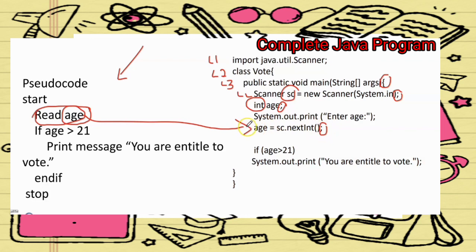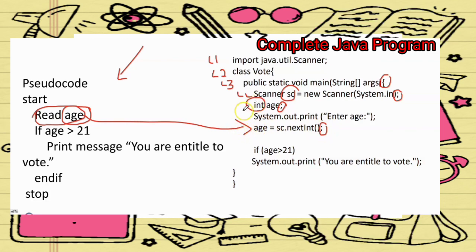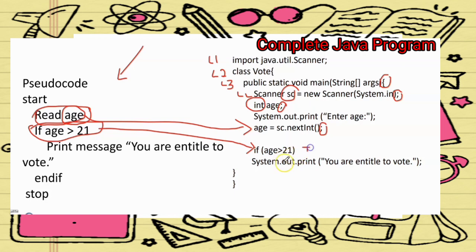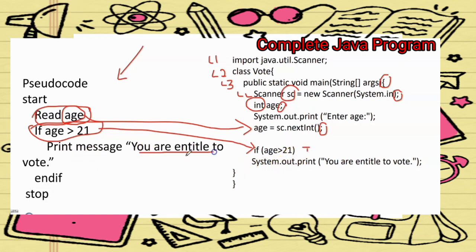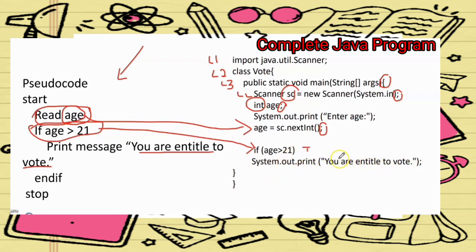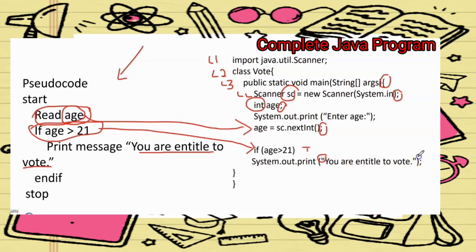You don't need to write the data type again because you already declared int age earlier. Then the condition: if (age > 21), if true, print 'You are entitled to vote'. Remember, to display a message you must use System.out.print("You are entitled to vote");. Make sure you put the double quotes because you want to display this message, ending with a semicolon.